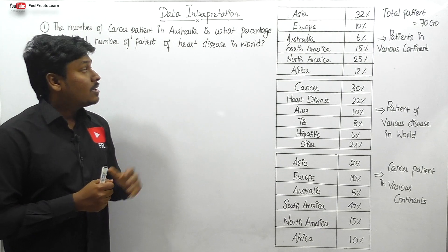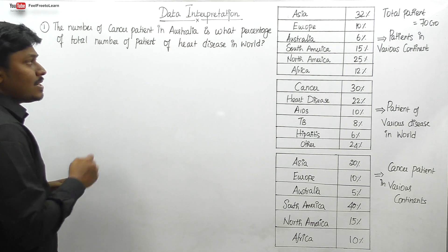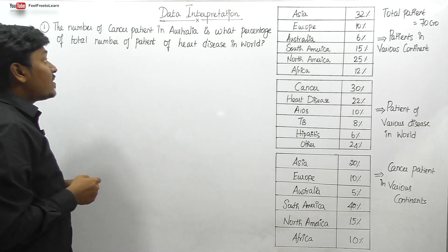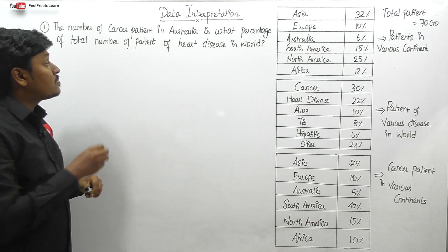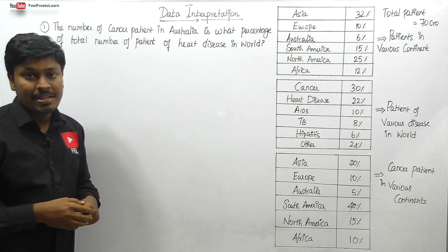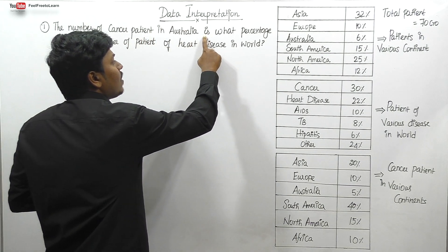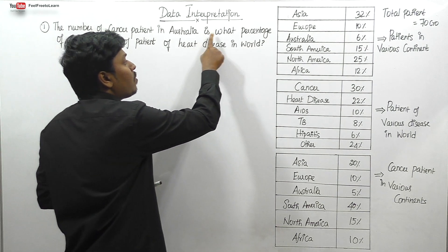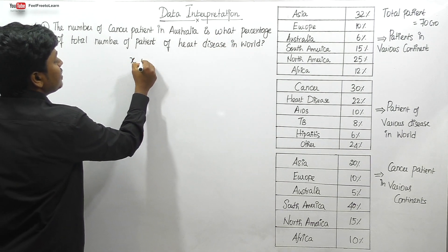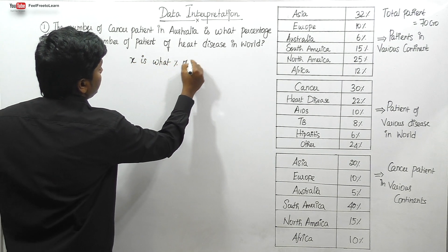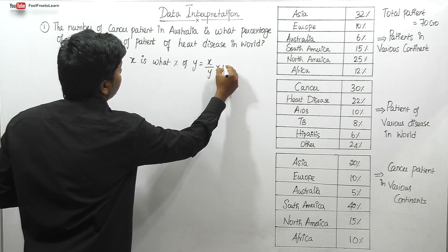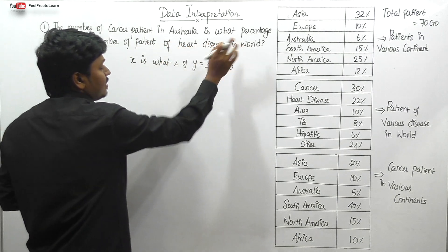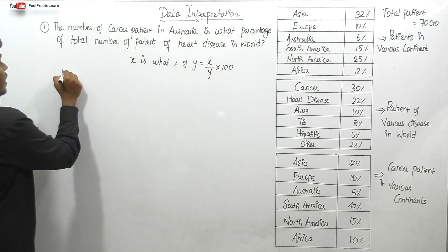Question number one: the number of cancer patients in Australia is what percentage of the total number of patients with odd disease in the world? This type of question appears in the toughest level exams. When a question is based on 'is what percentage,' the format is: x divided by y into 100, where x is cancer patients in Australia (numerator) and y is odd disease patients in the world (denominator).